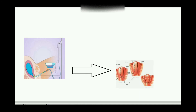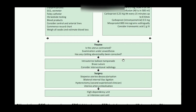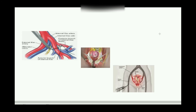We apply balloon tamponade first, and if that doesn't work, we apply the B-Lynch suture. As you can see in the flowchart, after intrauterine balloon tamponade and B-Lynch suture, we consider an interventional radiologist. Surgically, we do stepwise uterine devascularization — internal iliac artery ligation first — and if that doesn't work, we proceed to hysterectomy or uterine artery embolization with the help of the interventional radiologist.